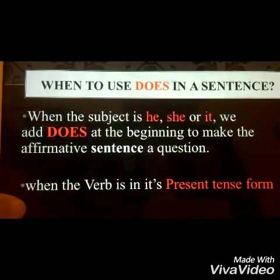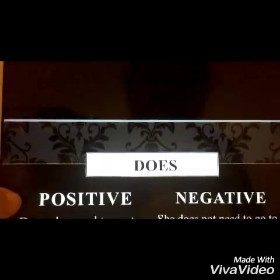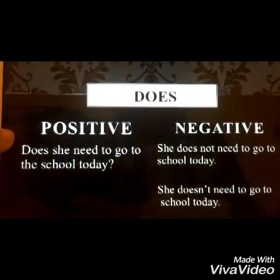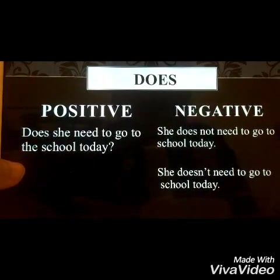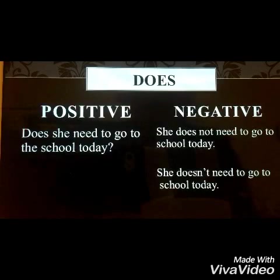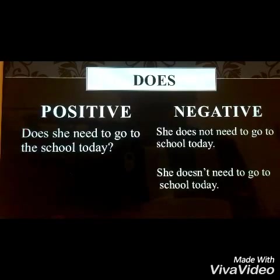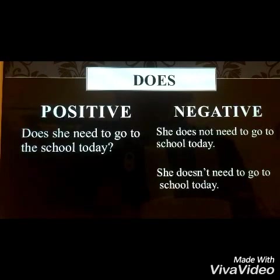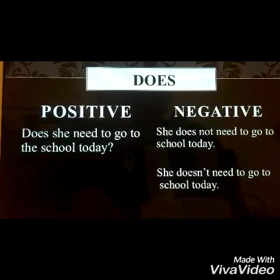Let's check out some examples that would help us understand it better. For the first example, we could say 'Does she need to go to school today?' For the negative sentence, you can say 'She does not need to go to school today.' The negative form of does there is 'does not.' Or you could make it into a shortcut form: 'She doesn't need to go to school today.'